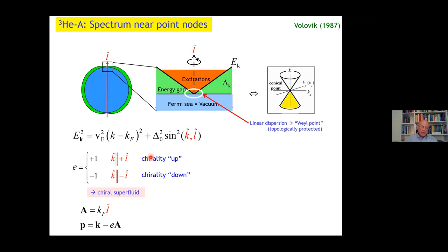We can introduce a fictitious charge plus one, which we call chirality up for k parallel to L, and minus one chirality down if k is minus to L. This is then a chiral superfluid. Then we can introduce a fictitious vector potential and electromagnetic momentum. With that, to our great surprise, one can write the Bogoliubov quasi-particle energy in a completely covariant form with an anisotropic metric tensor.